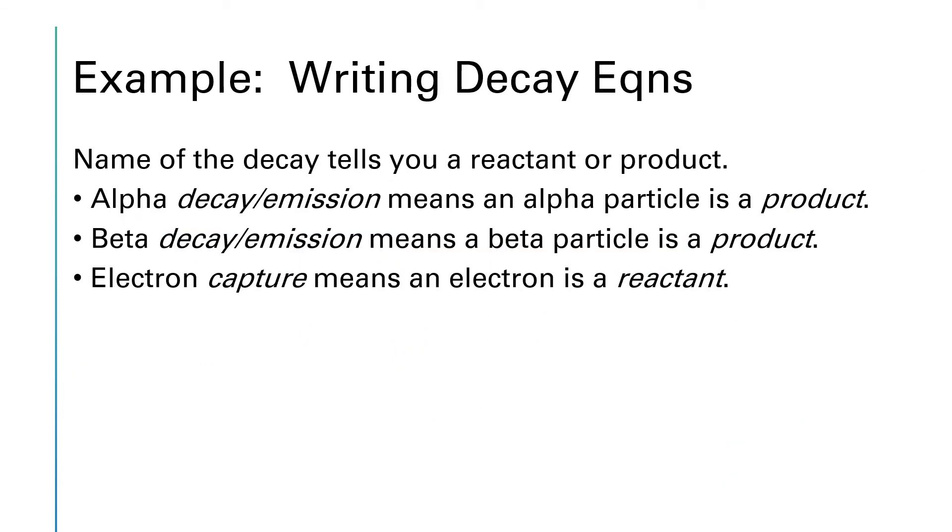Sometimes for these nuclear processes they will just tell you the name of the process, and part of the name will tell you one of the particles and also indicate whether that particle should be a reactant or a product. For instance, if you see the term alpha decay or alpha emission, that means that the nucleus is splitting off an alpha particle, so an alpha particle will be a product. If you see beta emission, a beta particle will be a product. Another form is electron capture, and capture means that the electron will be a reactant.